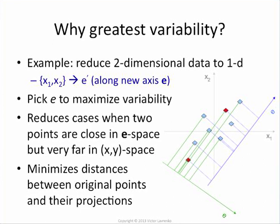One thing that high-variance dimensions preserve is relative distances between data points. Look at these two red points — they were pretty far away from each other in the original two-dimensional x1, x2 space. If I project them to the blue dimension, they're still pretty far away from each other. Two points that were nearby remain nearby in the new projection. But if I project to the green dimension, those two red points end up on top of each other — their distance was high originally, but after projection they're very close. So this projection doesn't preserve distances, and therefore doesn't preserve the structure.